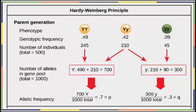If you add up all these totals, that's 490 plus 210 for a total of 700 big Ys and 210 plus 90 for a total of 300 little Ys. You can calculate the allelic frequencies. Our total population is 70% big Y and only 30% little Y. As frequencies, we would say 0.7 and 0.3 respectively.